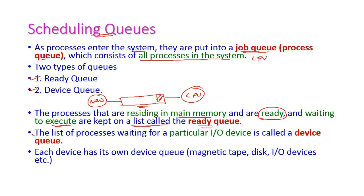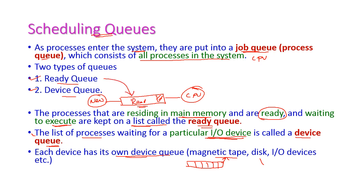The second type is the device queue — a list of processes waiting for a particular I/O device. Some processes may require I/O devices and will wait in a queue called the device queue. Each device has its own device queue. For example, there is a magnetic tape queue, a disk queue, an I/O device queue, and so on. So we have two types of queues: the ready queue for processes ready to execute on the CPU, and the device queue for processes waiting to access a particular device.